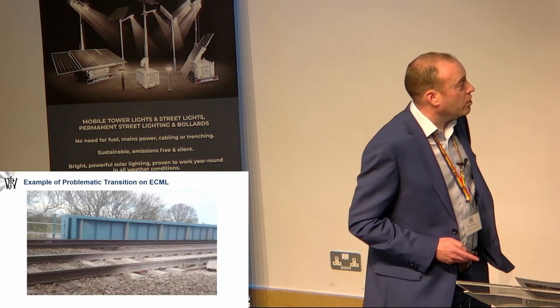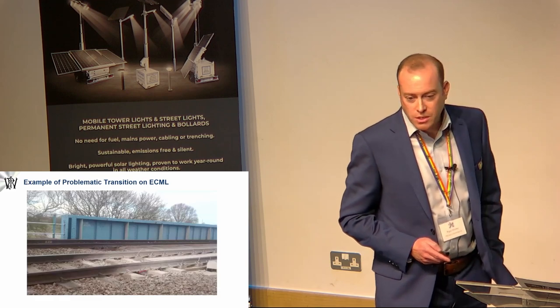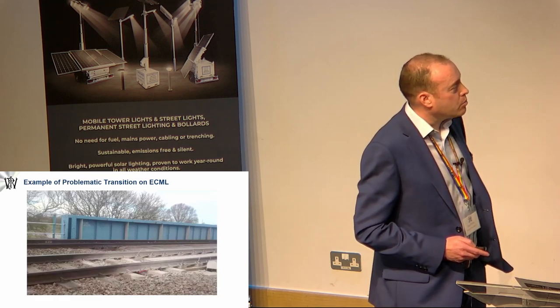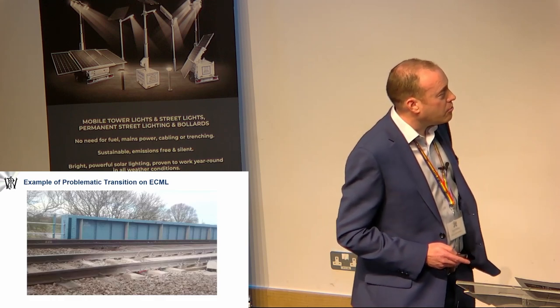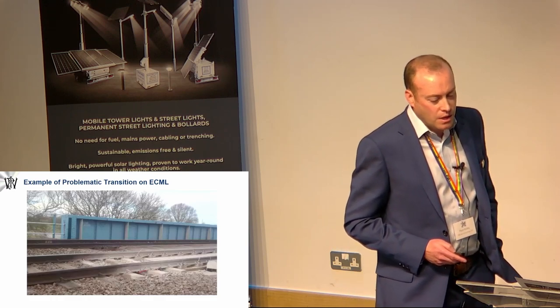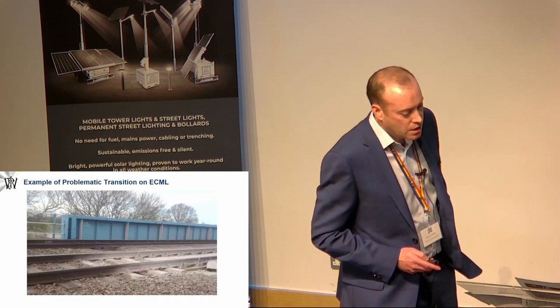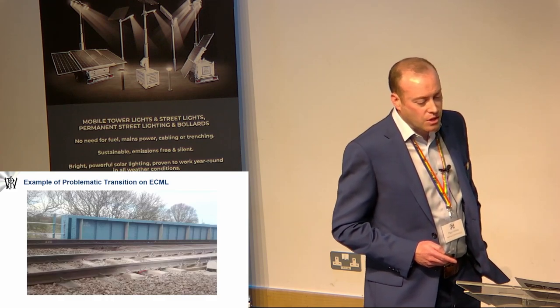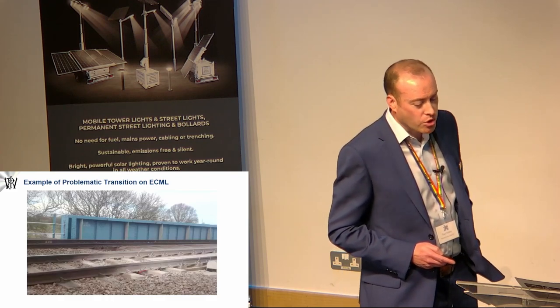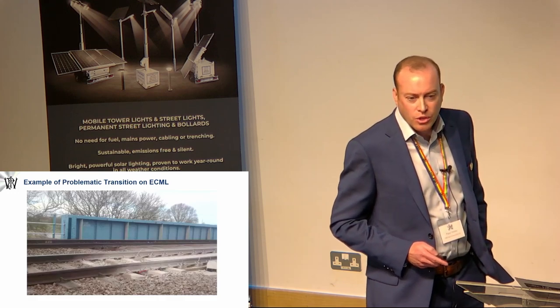Just an example of one of Network Rail's problematic sites, probably a well-known site to most people here, is Bridge 144 on the East Coast Main Line. As you can see, it's got heavy ballast migration, serious settlement and voiding, loss of track geometry, issues with the bridge deck and the fastenings.